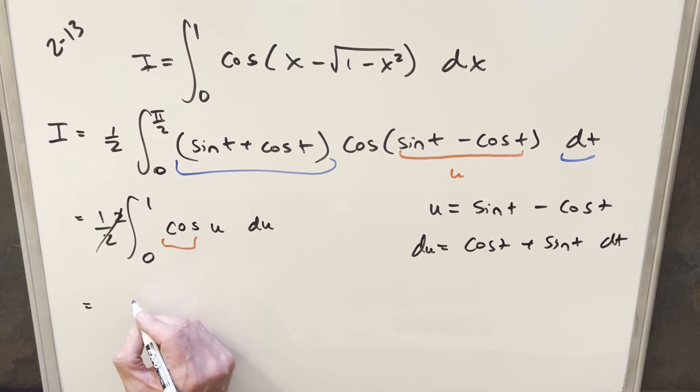And now we can just go ahead and integrate. So integral of cosine u is going to be just sine u evaluated from 0 to 1.